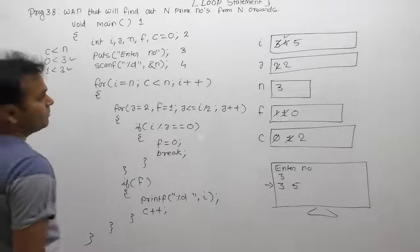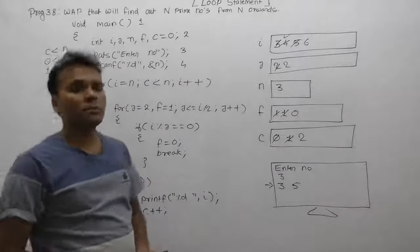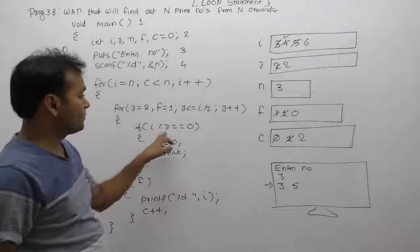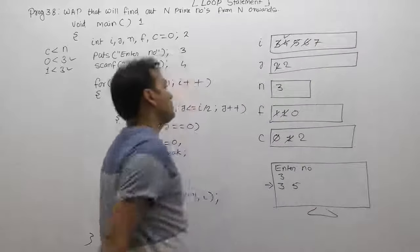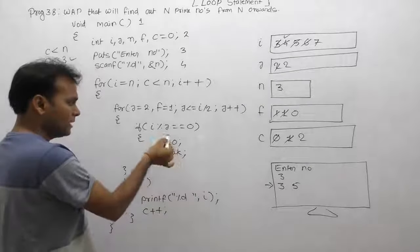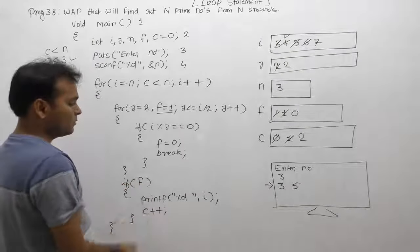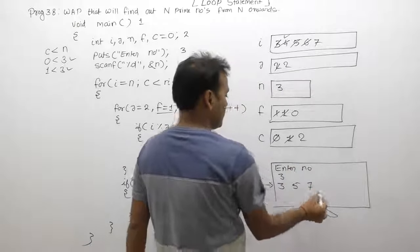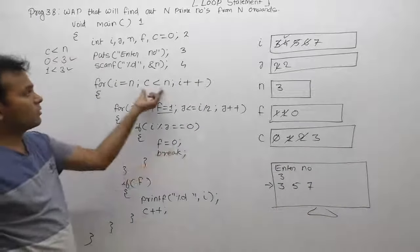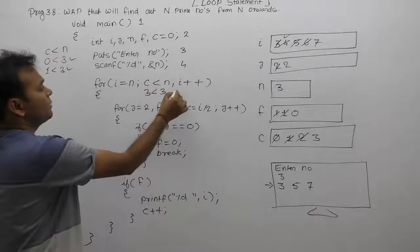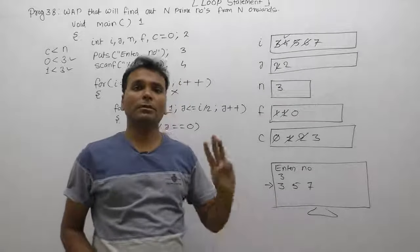I++ makes I equal to 6. Checking 6: it is not a prime number, so F becomes 0 and 6 is not displayed. Then I becomes 7. 7 is a prime number — F stays 1, condition is true, 7 is displayed. C++ makes C equal to 3. Now C's value equals N (both are 3), so the outer loop condition C less than N becomes false. Execution terminates. Final output: 3, 5, 7 — displaying 3 prime numbers from 3 onwards.